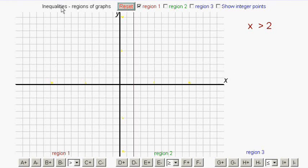In this clip we're going to be looking at inequalities and how they're represented on graphs. Let's start with a very simple one. Here we have the line x equals 2 drawn on the graph for us.